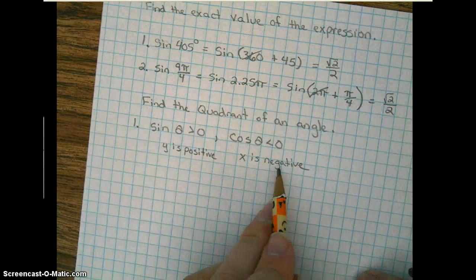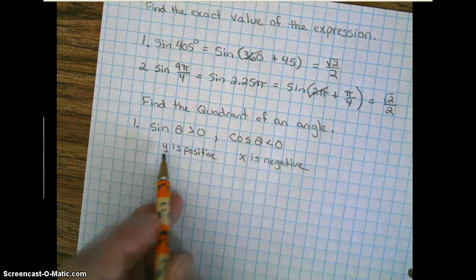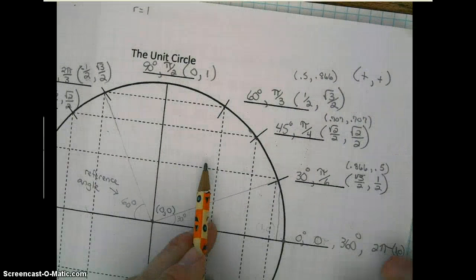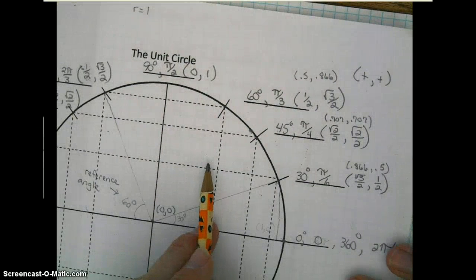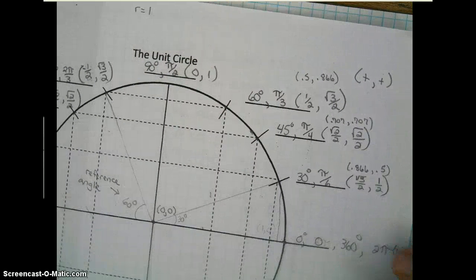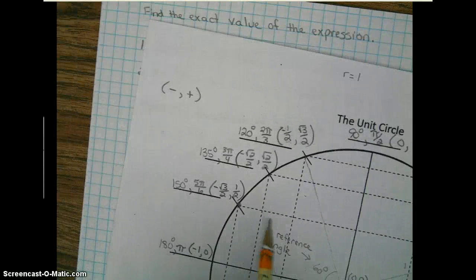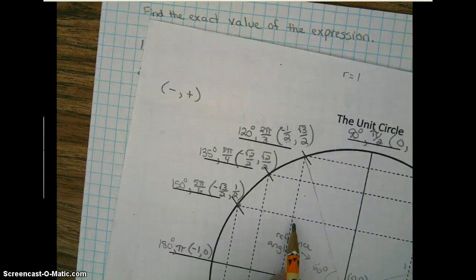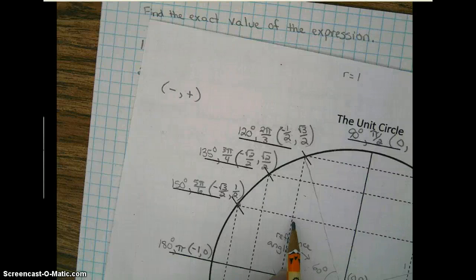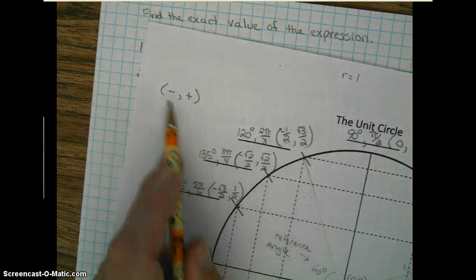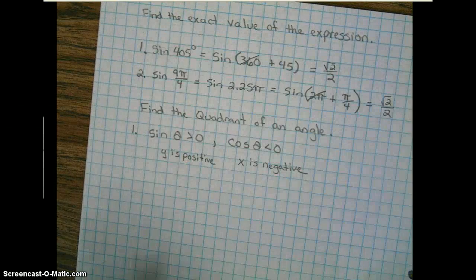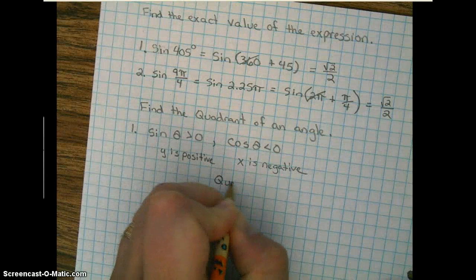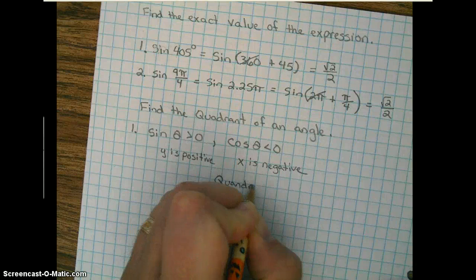So where x is negative and y is positive. On our unit circle, if you're in the first quadrant, x is positive, y is positive. Second quadrant: negative, positive. And I believe that's what we want here. We want to know where x is negative and where y is positive. So we are in quadrant 2.